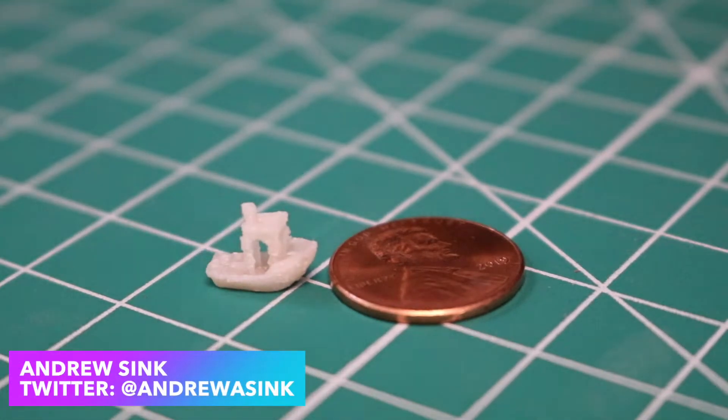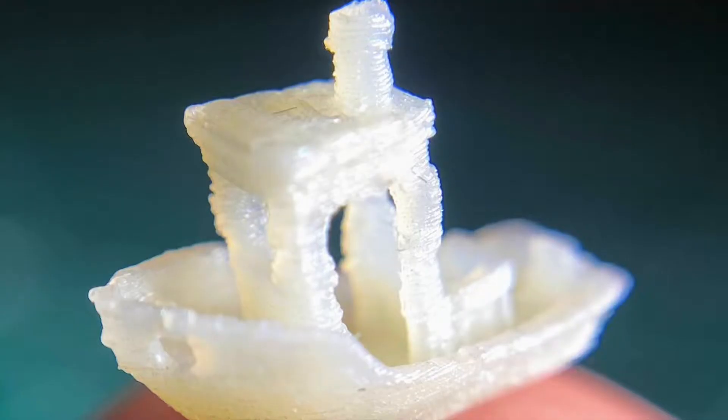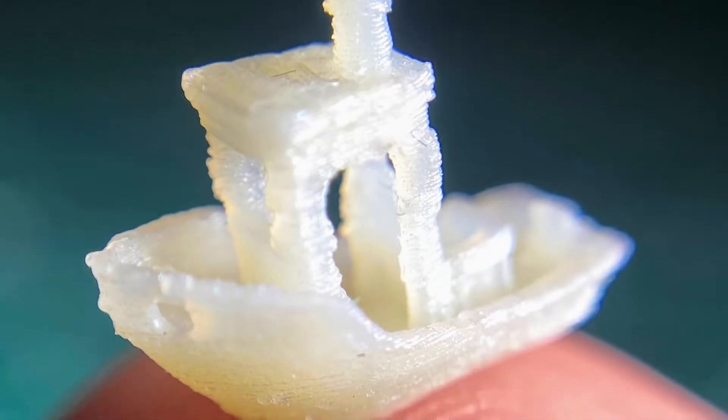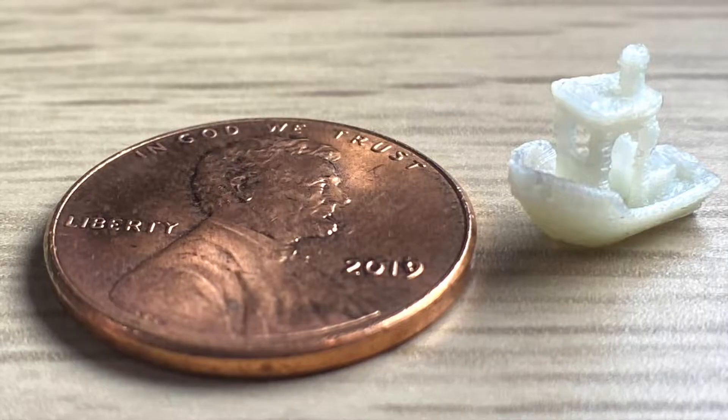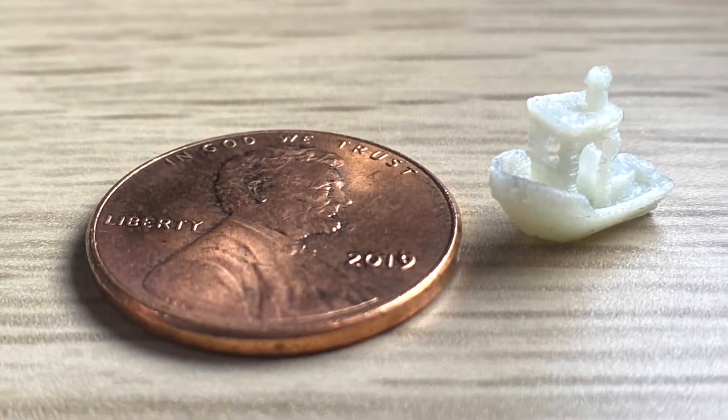How's it going 3D printers? Andrew Sink here, and in this video I'm going to tell you how I printed this tiny benchy using a 0.2mm nozzle. This isn't really a best practices video, but instead I just want to talk a little bit about my experience when printing with such a fine nozzle.